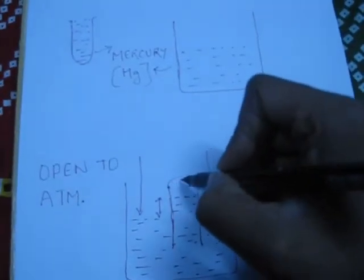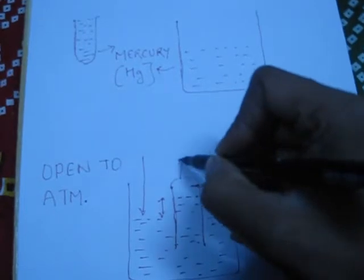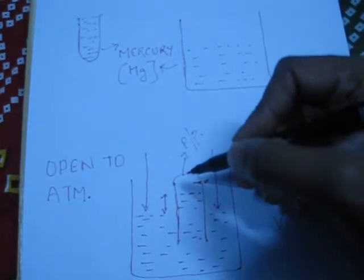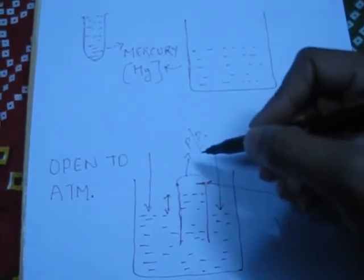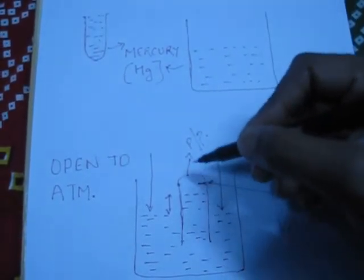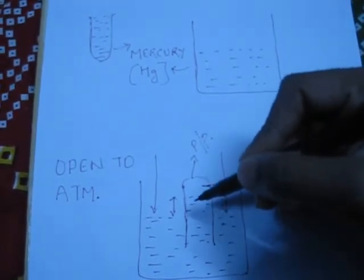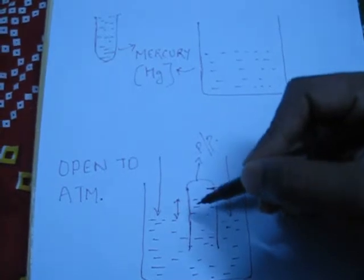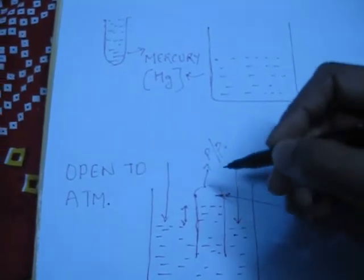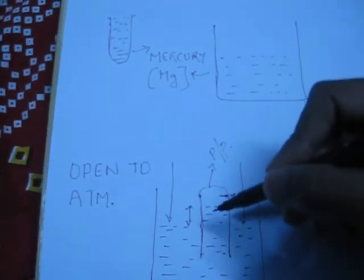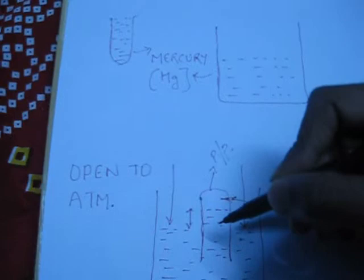Now the important conclusion is: no pump can make this complete vacuum, so no pump can suck this to the atmospheric pressure height, that is 76 centimeter for mercury and 10 meter for water. Even if pump makes complete vacuum, like in this case, it can only suck 76 centimeter for mercury and for the case of water, 10 meter.